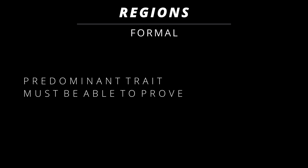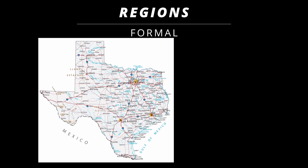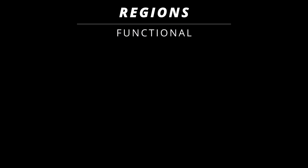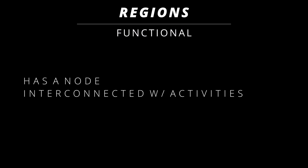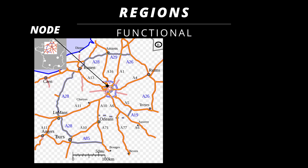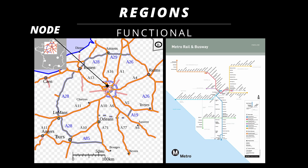We have three types of regions. Starting with the formal region, which has a predominant trait throughout the region and you must be able to prove it — for example, one can prove the boundaries of the state of Texas as laid out by the government, and you can prove the Rocky Mountain region exists because of the elevation. Then there are functional regions, which have a node or center interconnected by activities or services surrounding that node. The analogy I like to use is a wheel — it has a center and the spokes connect the node to the outside. Examples include France's auto routes with Paris as the node, and the metro in Los Angeles with downtown LA or Union Station as the node, spreading out like a wheel to various parts of the city.